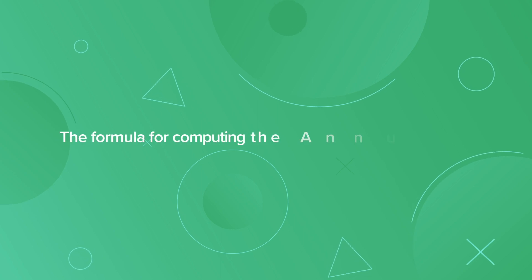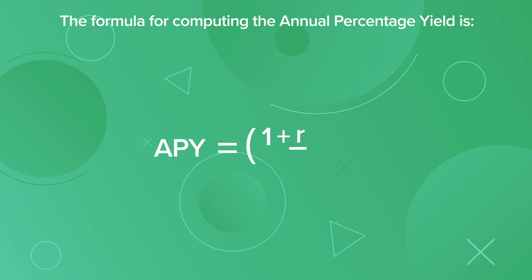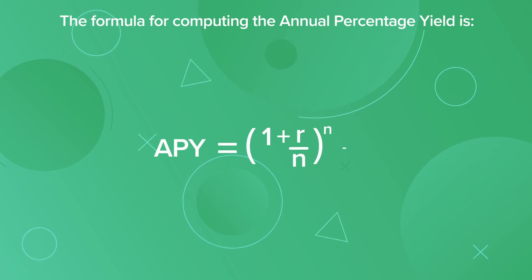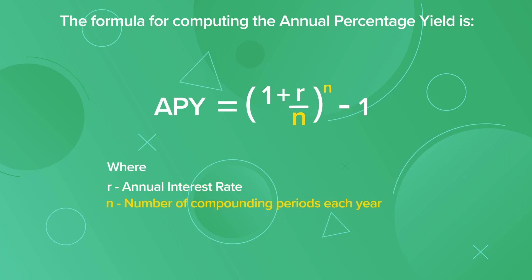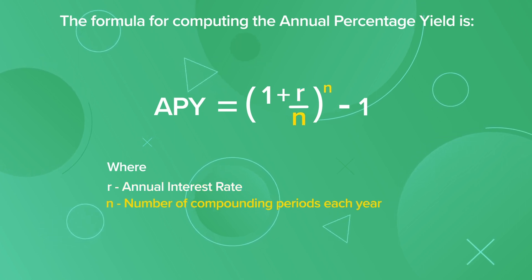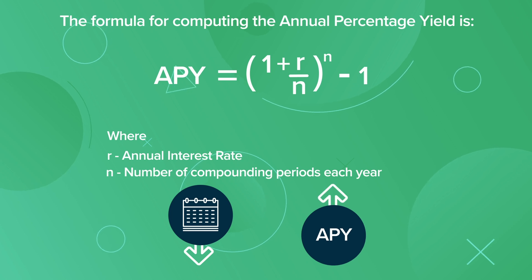The formula for computing the annual percentage yield is APY equals (1 plus r divided by n) to the power of n minus 1, where r is the stated annual interest rate and n is the number of compounding periods each year. The smaller the time frame in which interest compounds, the higher the APY will be.